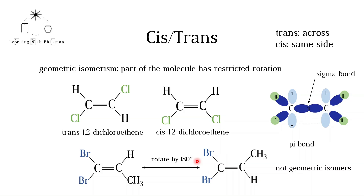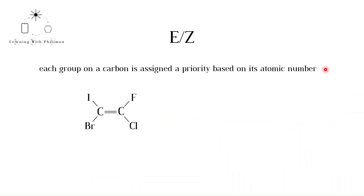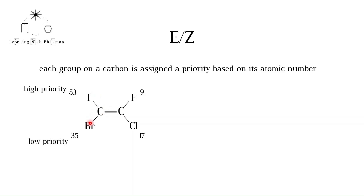Now let's take a look at the naming of more complex geometric isomers. In the case of this alkene, each carbon is bonded to different groups. We cannot use the cis-trans naming system, as the carbons are not bonded to one hydrogen atom each. Instead, the groups of each carbon are assigned a priority based on their atomic number. Here we see the atomic numbers of each halogen. Checking the first carbon, iodine has a higher atomic number than bromine, so iodine is high priority. Checking the second carbon, chlorine has a higher atomic number than fluorine, so chlorine is high priority.